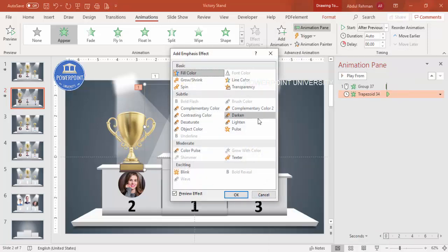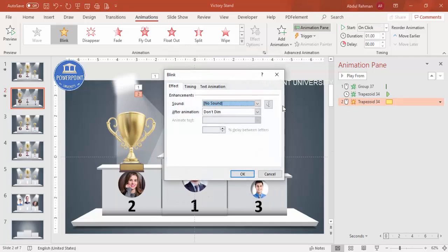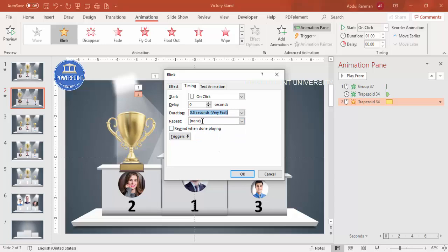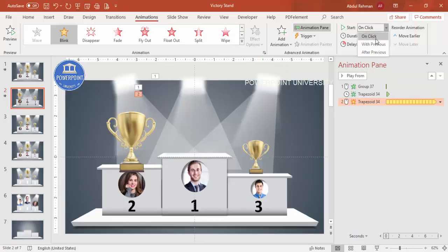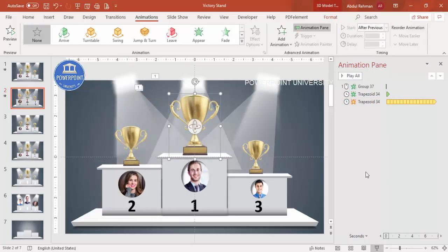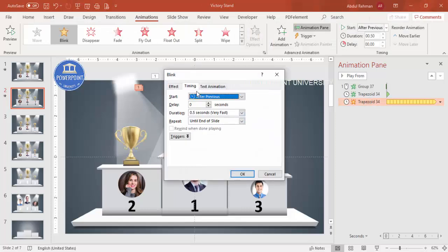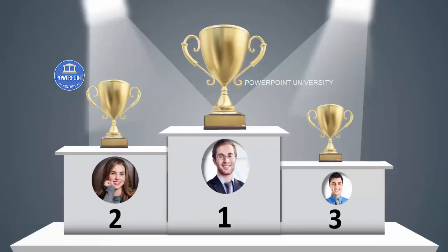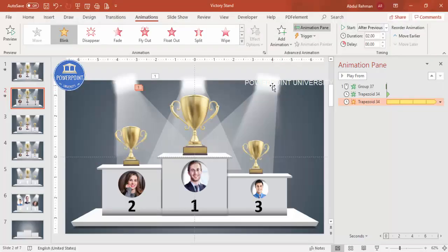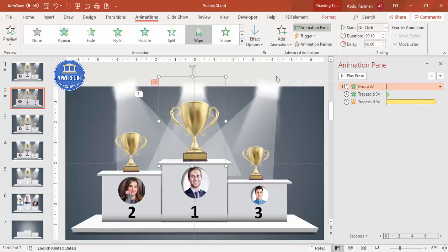Add one more animation to the spotlight: go to Add Animation > More Emphasis and select Blink. Double-click the timing, set it to very fast, and set it to repeat Until End of Slide. Set it to After Previous. When you click you can see it blinking — if too fast, set it to Medium. For the second and third winner images, use Copy Animation and apply the same settings.